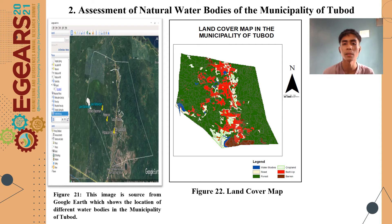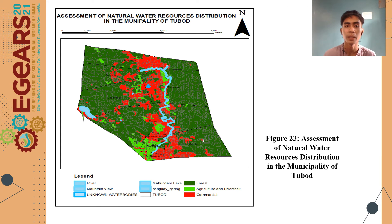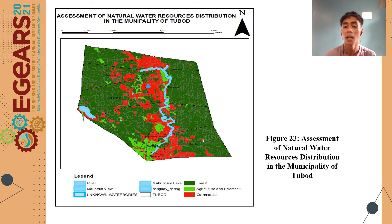This slide shows the assessment of natural water sources distribution in the said municipality. Figure 21 shows Google Earth imagery used for validation. Figure 23 shows the land cover map considering six classes: cropped land, water bodies, road, forest, and barren. This slide also shows the assessment of natural water sources distribution, reclassified from six classes into three uses: commercial, forest land, and agricultural and livestock.